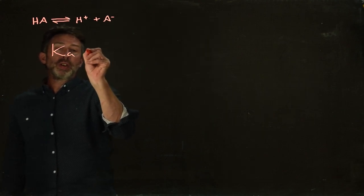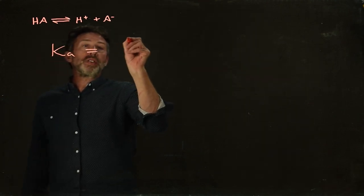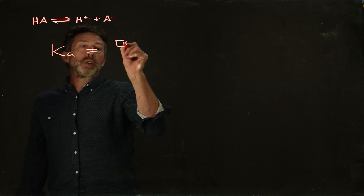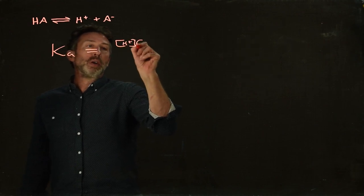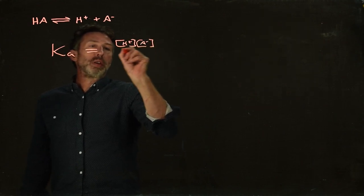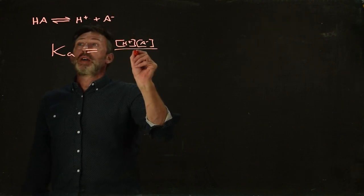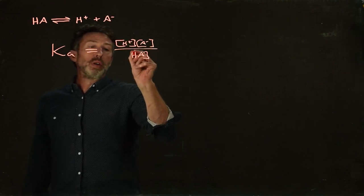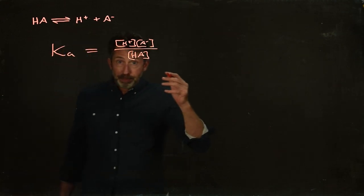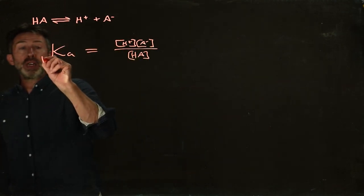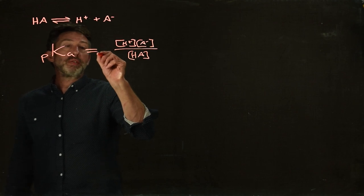So the dissociation constant, of course, is equal to the concentration of the products, H+ times A-, divided by the concentration of the reactants. And the pKa is simply the log 10 of this.